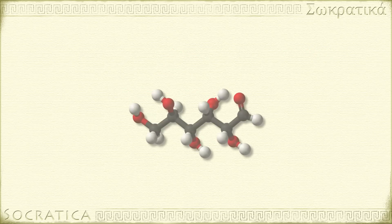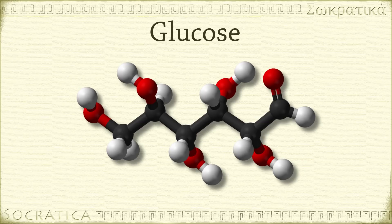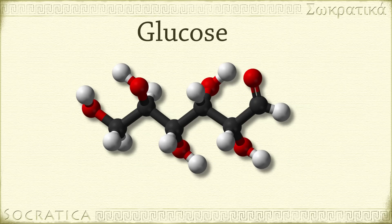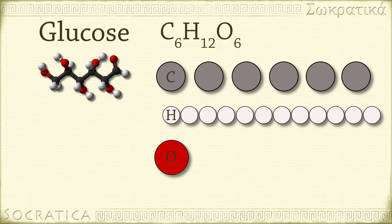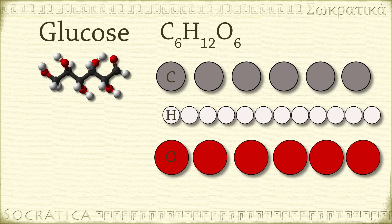For a more complicated example, let's look at glucose. We usually think of glucose as a single thing — it's one sugar, a monosaccharide, and it is one molecule. But it's made up of three kinds of atoms: carbon, hydrogen, and oxygen. Its formula is C6H12O6, so one molecule of glucose has 6 atoms of carbon, 12 atoms of hydrogen, and 6 atoms of oxygen. What is the percent composition by mass of glucose — what percent of its mass is from carbon, what percent is hydrogen, and what percent is oxygen?